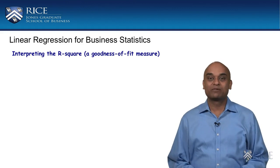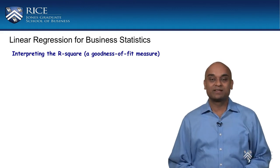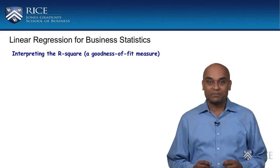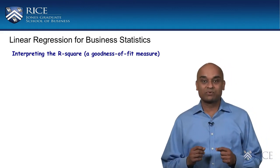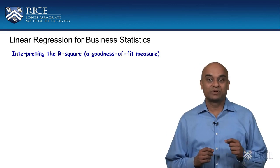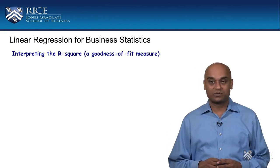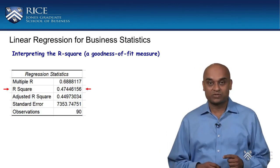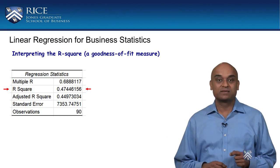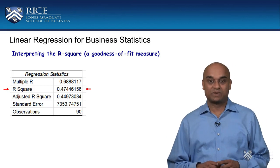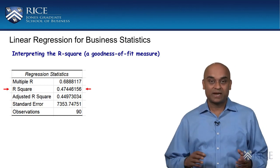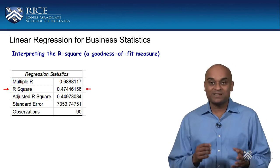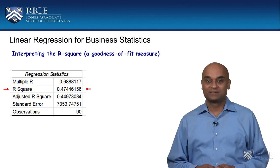Continuing with the regression model we estimated in the last lesson, let us now interpret the R square measure produced in the output. The measure is a goodness of fit measure — it tells us how well the regression model fits our data.